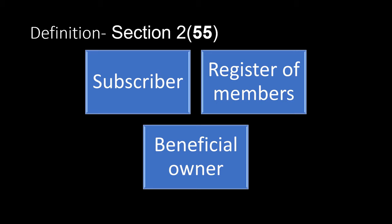So there are two groups: subscribers to the memorandum, and those who allow the company to write their name in the register of members. In a company with share capital, these people are shareholders. But if the company does not have share capital, members are still those who subscribed to the memorandum or allowed their name in the register. In a company with share capital, the names of shareholders are normally written as beneficial owners in the records of depositories. That is the answer to the question: who is a member?